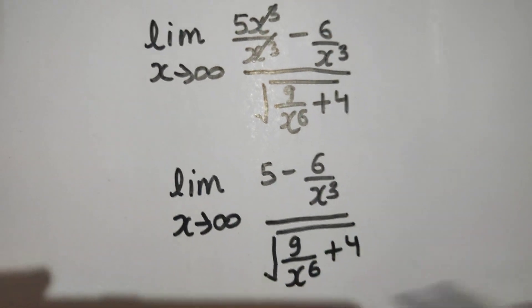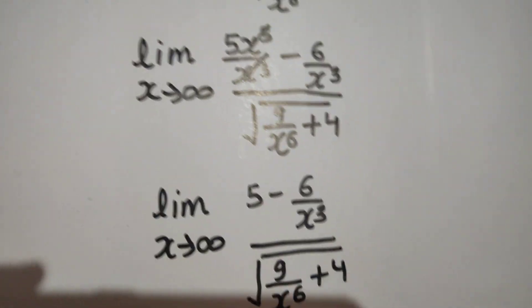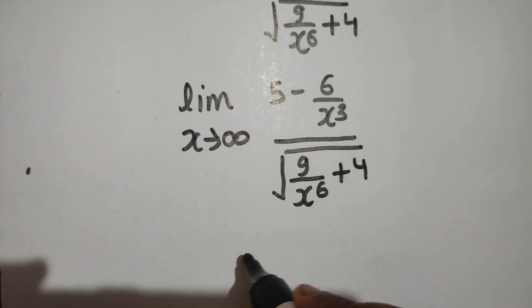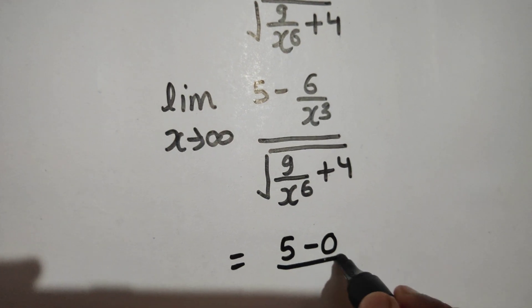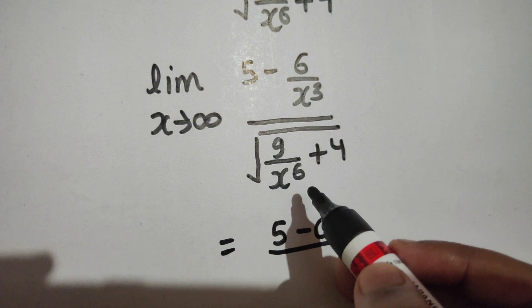Then this will become 0. So you will get 5 - 0, and in the denominator you are going to get 9/x⁶ will become 0.